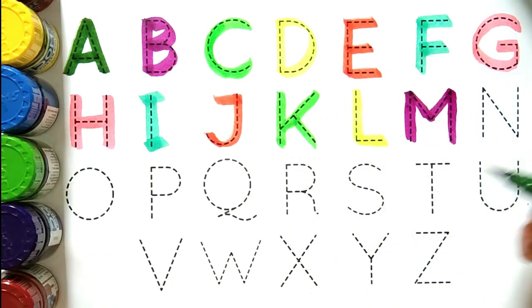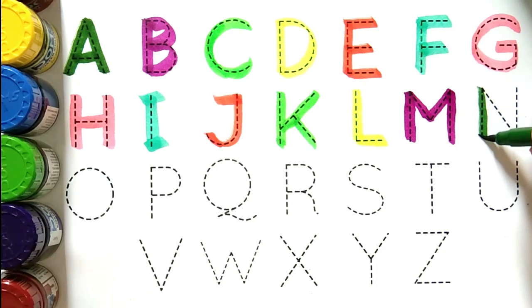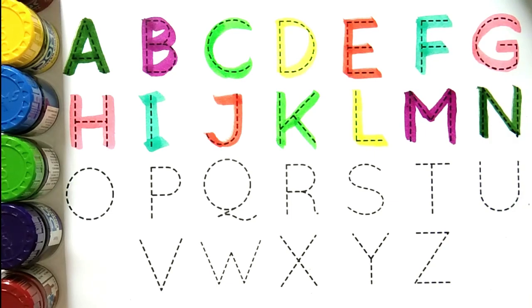Green color. N, N for net. N for kya hota hai bachon? N for net.